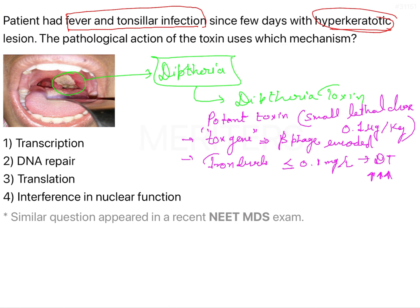The diphtheria toxin has two subunits: the A subunit and the B subunit. The molecular weight of both subunits together is 62,000 Daltons.